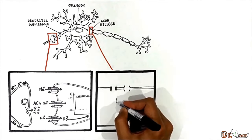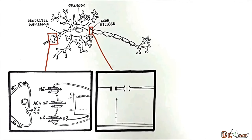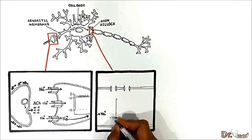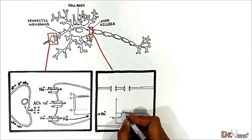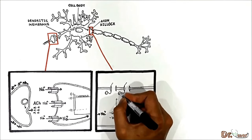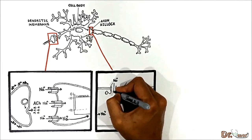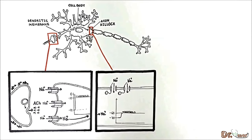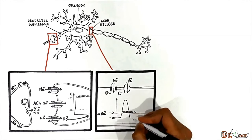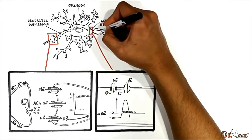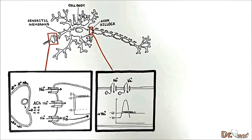Zooming in on the membrane of the axon hillock: when a current flows up to the axon hillock, it takes the membrane potential from its resting state up to the threshold potential. As a consequence, the voltage-gated sodium channels open up and we get a sodium influx. This sodium influx initiates an action potential, which further transmits forward along the axon.